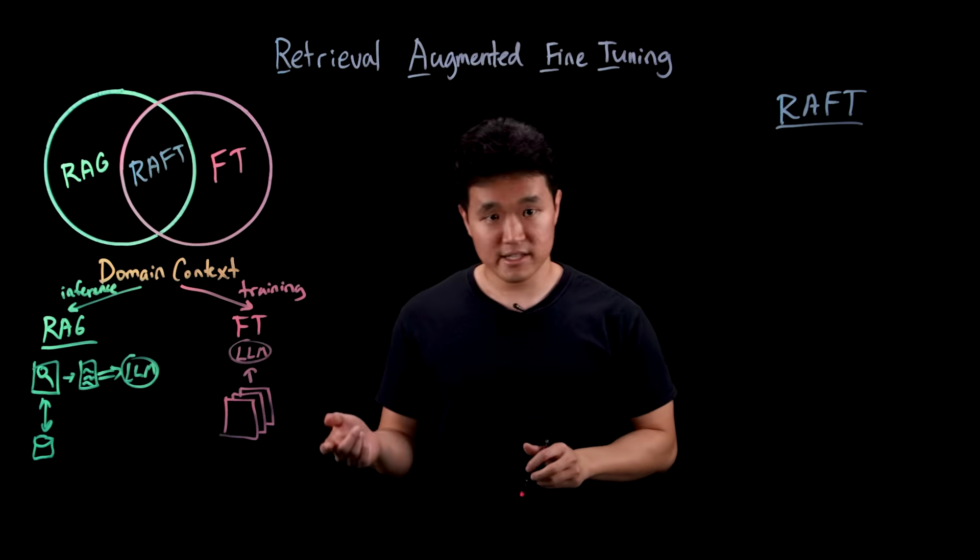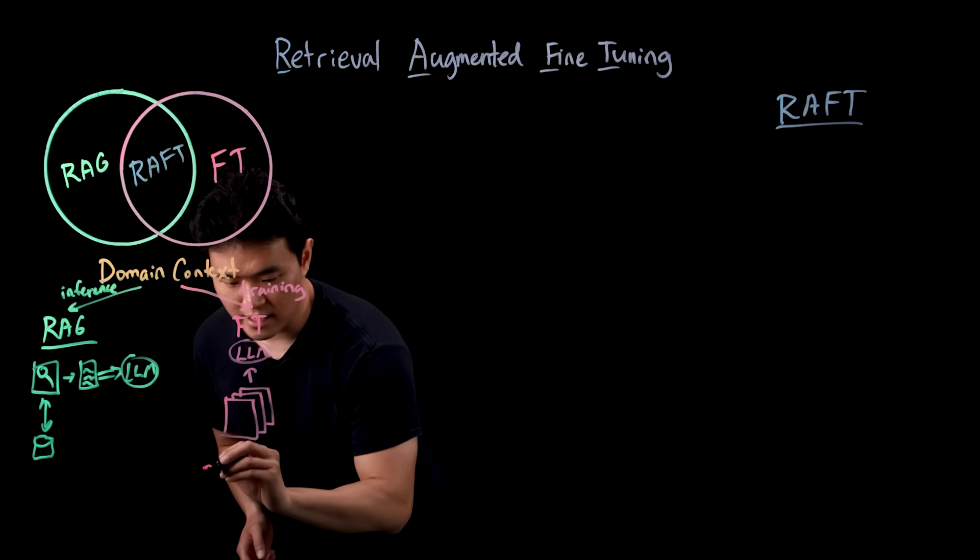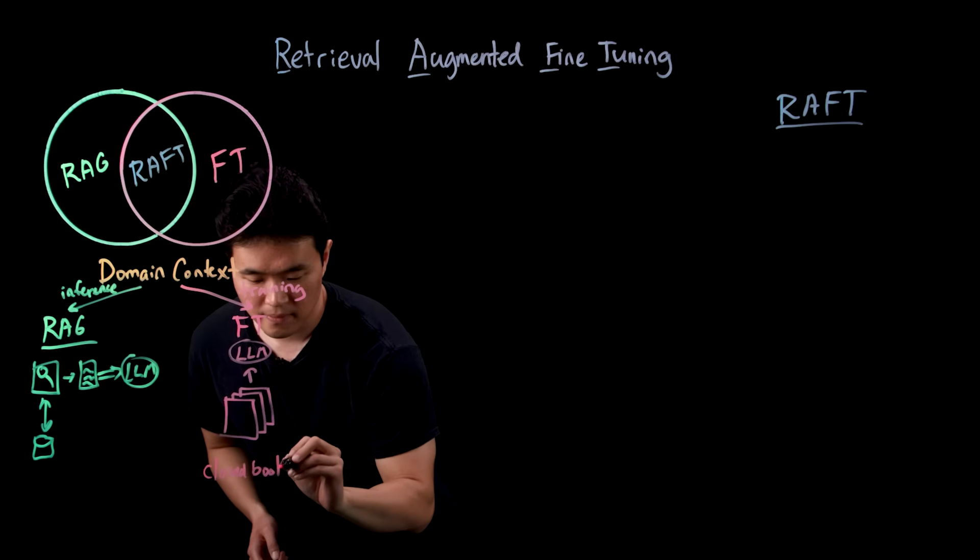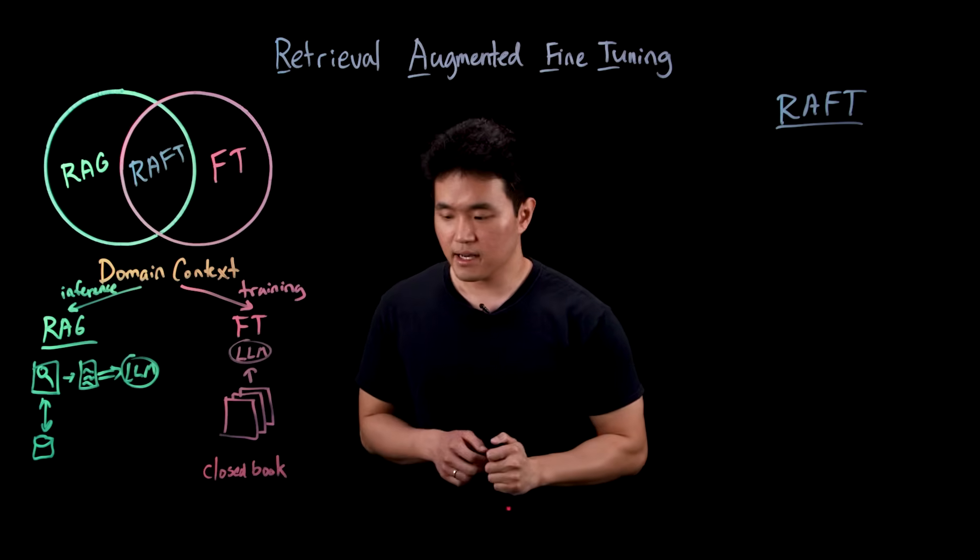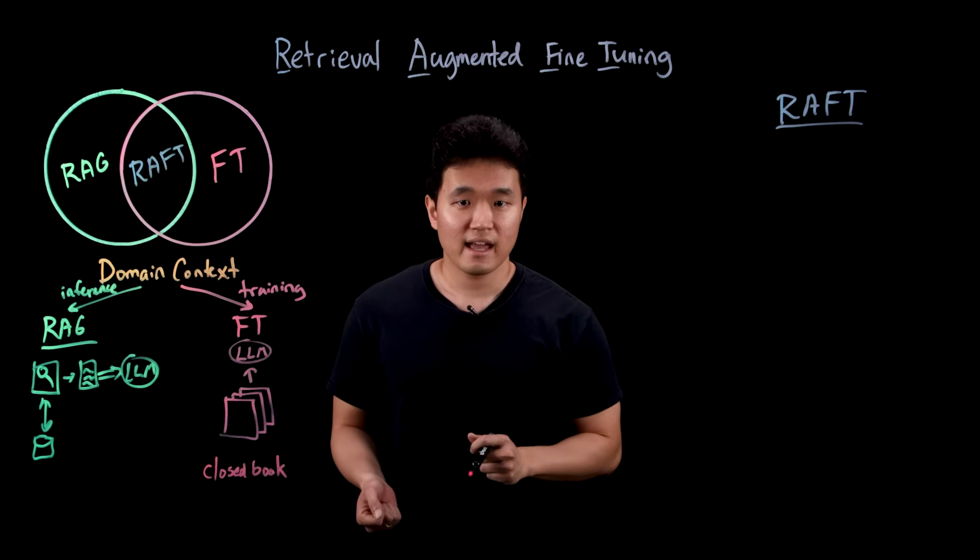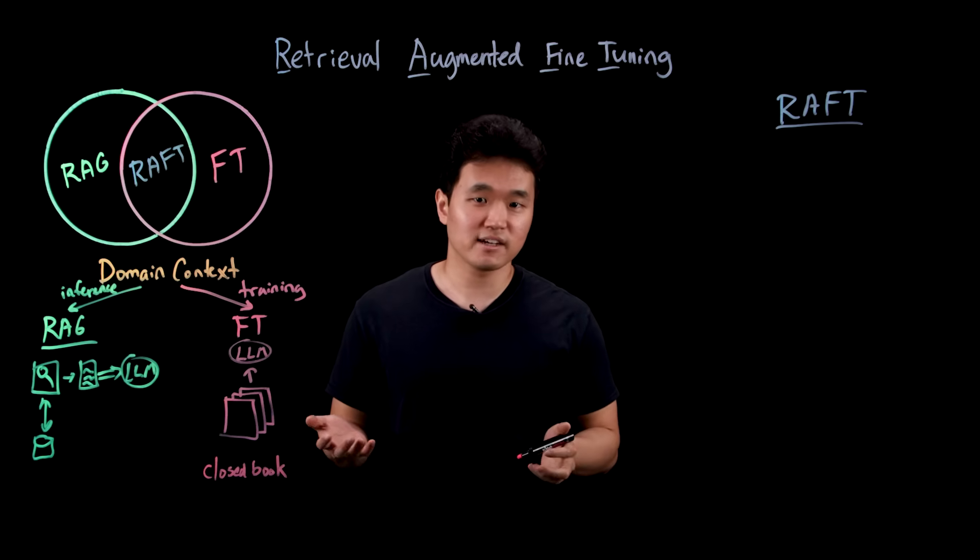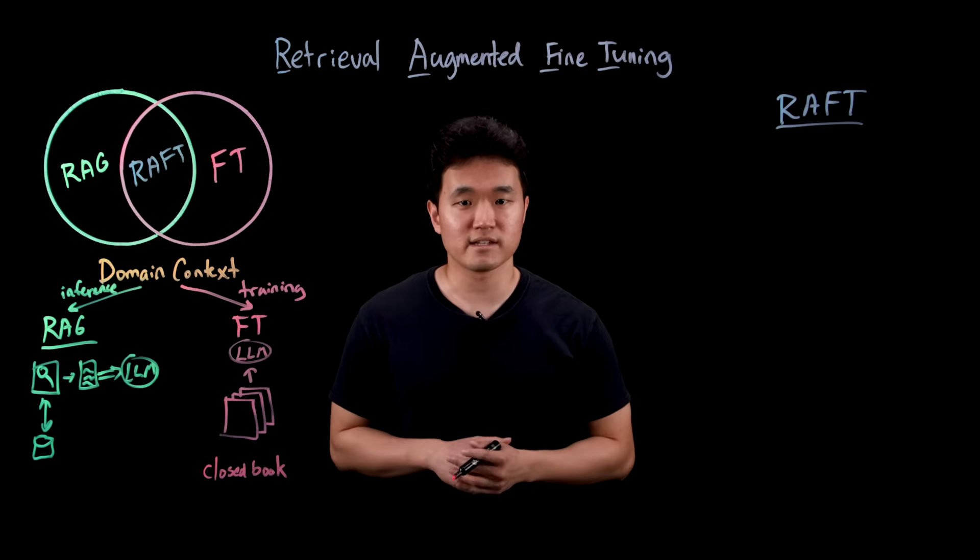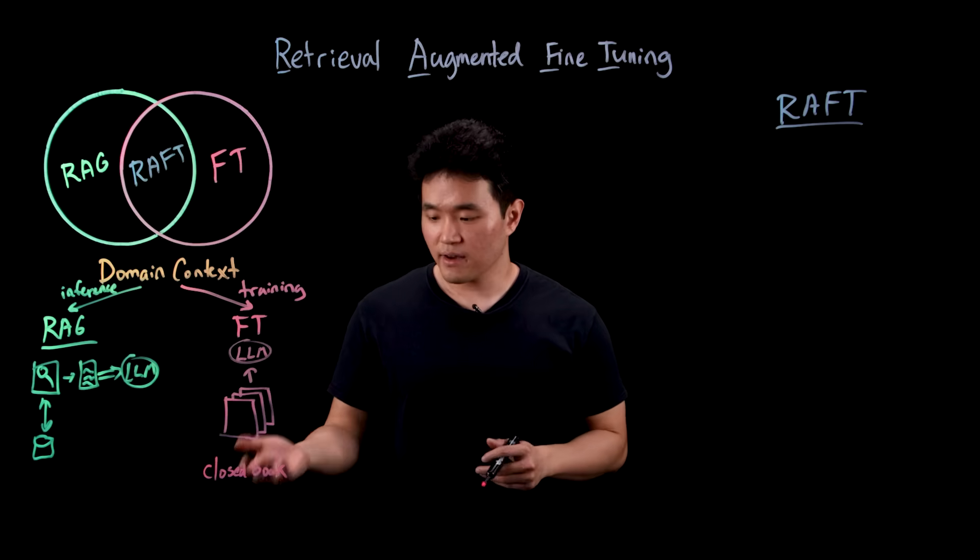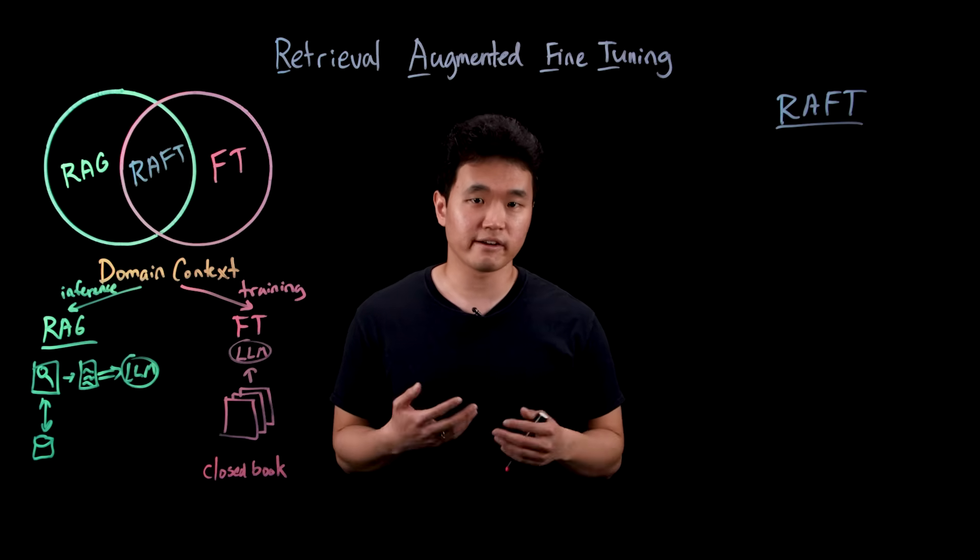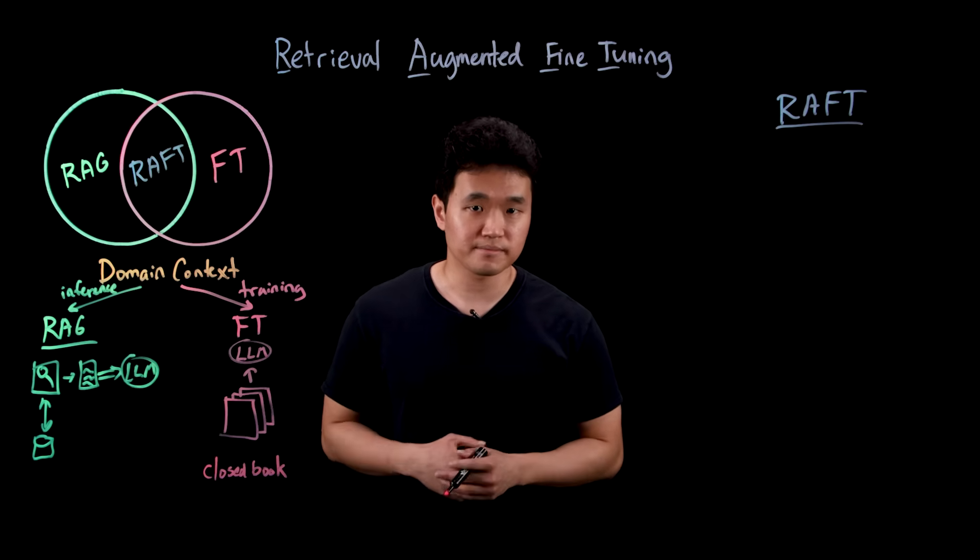Suppose that fine-tuning is like studying for a closed book exam. Since you can't use your notes, you have to memorize all the materials in advance. And if you study all the wrong stuff, you probably won't do so well since you don't have access to new information. In the same way, with fine-tuning, the model has to rely completely on the knowledge it learned during training in order to answer the user's question.